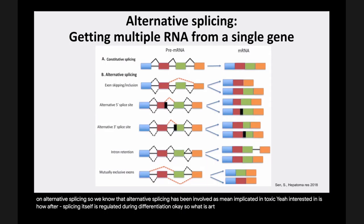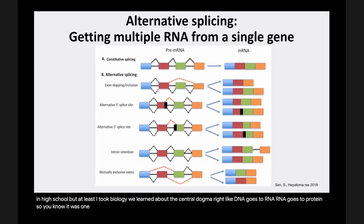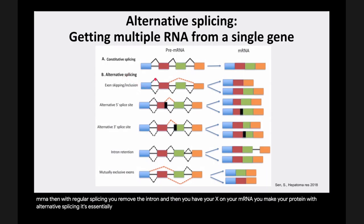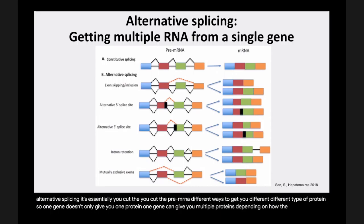What is alternative splicing? Most of us learned about the central dogma in high school biology: DNA goes to RNA, RNA goes to protein — one gene, one protein. But that's not quite the case. With constitutive splicing you have your pre-mRNA, you remove the intron, you have your exon, your mRNA, and you make your protein. With alternative splicing, you cut the pre-mRNA different ways to get different types of proteins. So one gene can give you multiple proteins depending on how the pre-mRNA has been spliced.